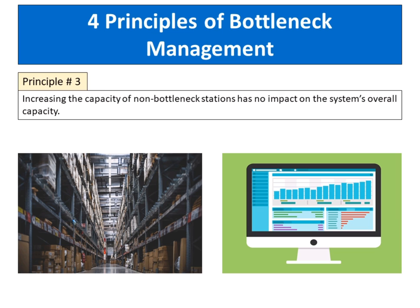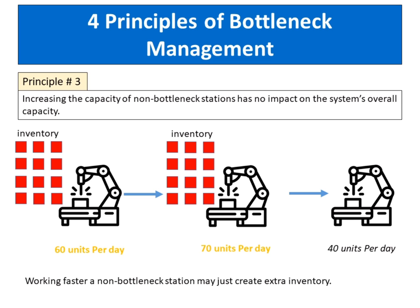Principle number three: increasing the capacity of non-bottleneck stations has no impact on the system's overall capacity. Working faster than a non-bottleneck station may just create extra inventory with all of its adverse effects. This implies that non-bottlenecks should have planned idle time. Extra worker setups at non-bottleneck stations will not cause delay, which allows for smaller batch sizes and more frequent product changeovers at non-bottleneck stations.